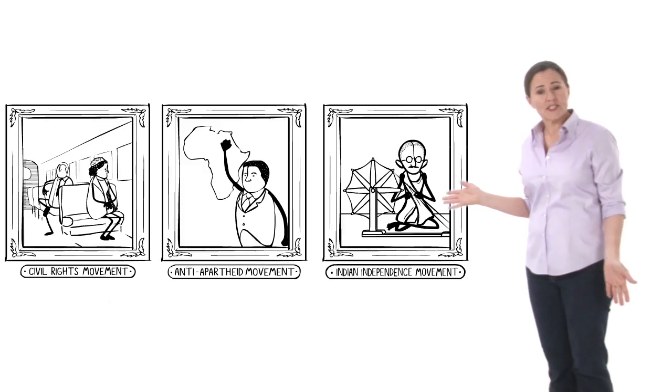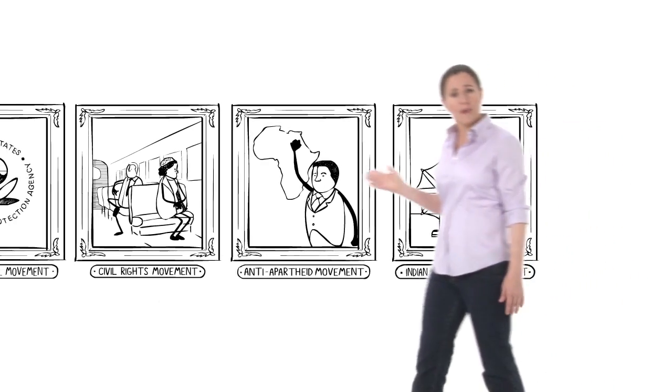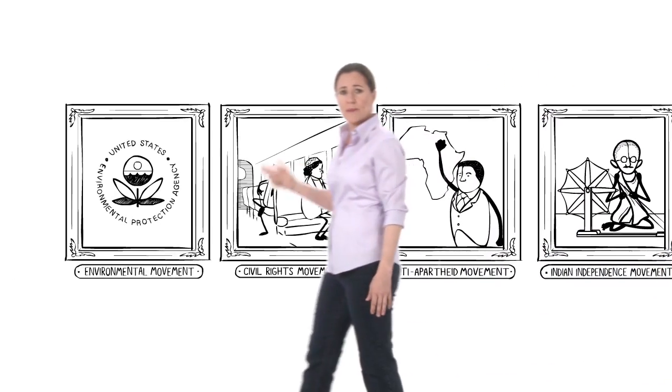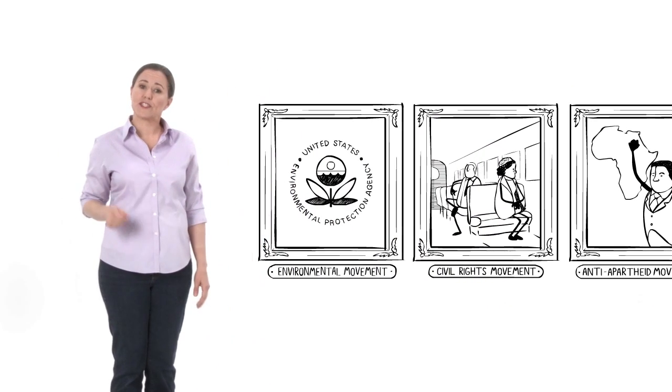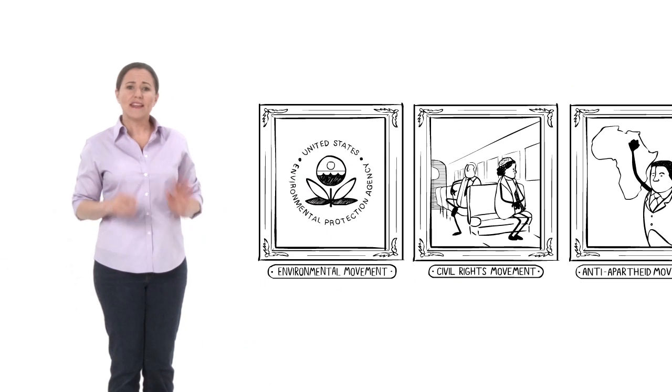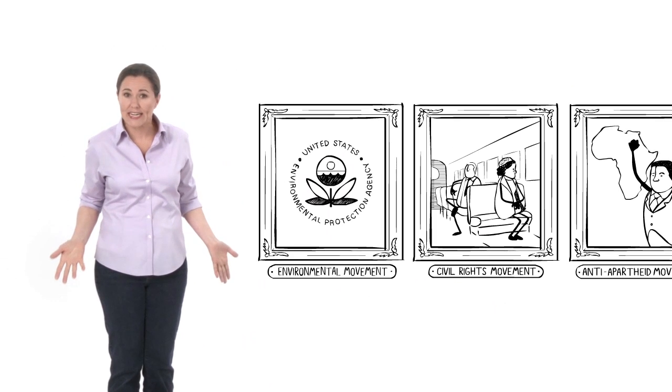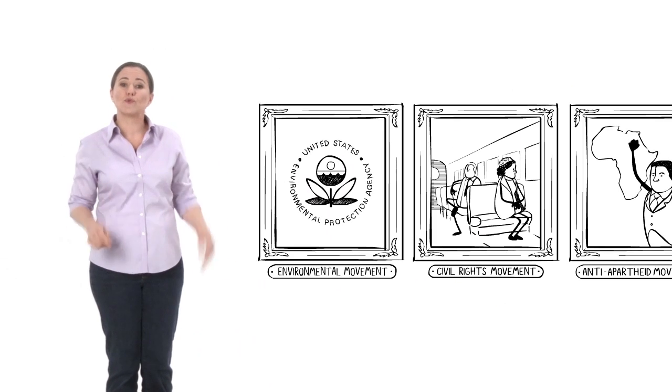So how do we make big change? To answer that question, I went back and looked at Gandhi, the anti-apartheid movement in South Africa, the U.S. civil rights movement, and the environmental victories here in the 1970s. They didn't just nag people to perfect their day-to-day choices, they changed the rules of the game.